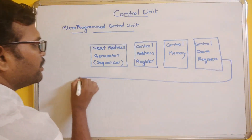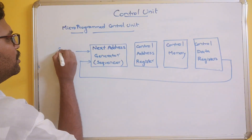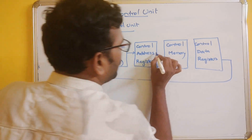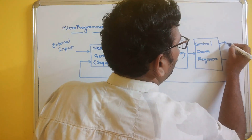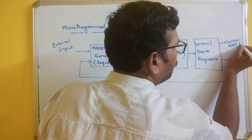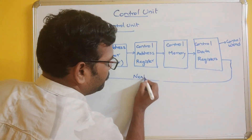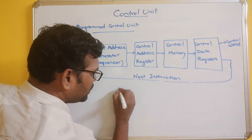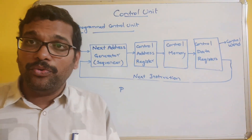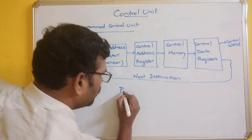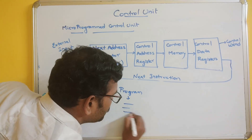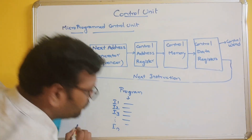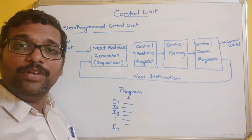The unit will be redirected and there will be some sort of external input. There will be connections from one component to another, and there will be a control word and a next instruction signal. A program, as we have been saying, is designed with the help of instructions — for example, instruction one, instruction two, instruction three, and so on. By executing all these instructions, the program will be executed. The next address generator holds the address of the next instruction to be executed.